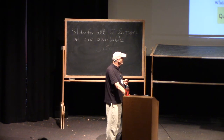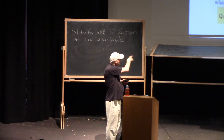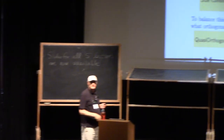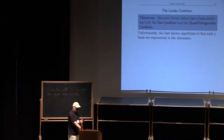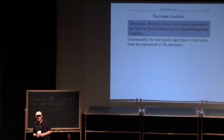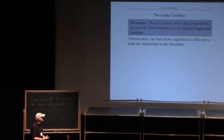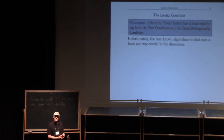The goal is to find a basis that satisfies the size condition and the quasi-orthogonality condition for all i. Hermite proved that there was always a basis satisfying the size condition and the quasi-orthogonality condition, and this is actually a pretty good basis.